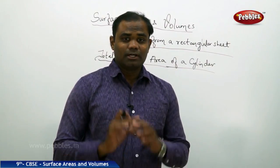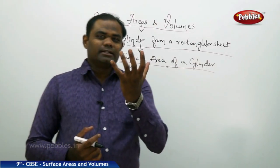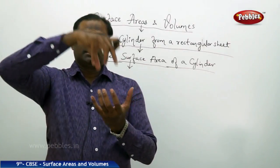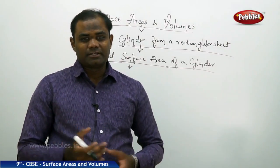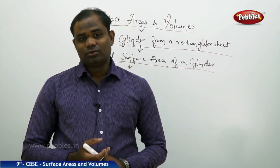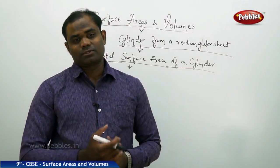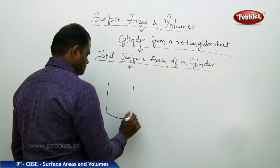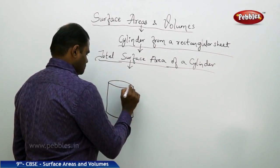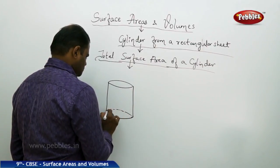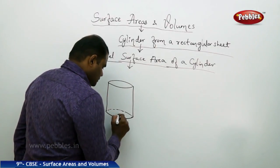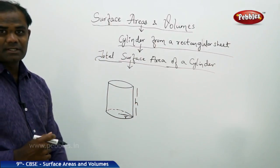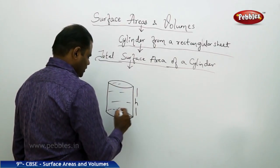Now that we have discussed the curved surface area, there are other possibilities. What if I take a cylinder which is closed both on the top and bottom lid? Let's take the different cases of a closed cylinder. This session is about finding the total surface area of a closed cylinder, where the radius is r and the height is h.